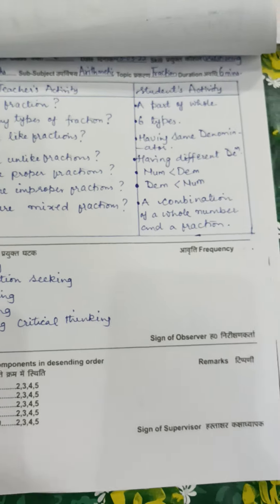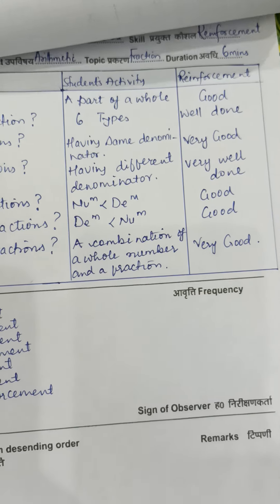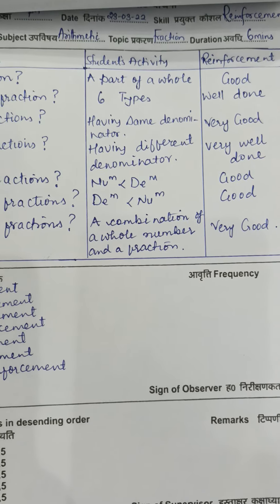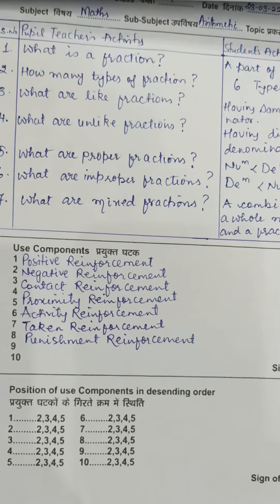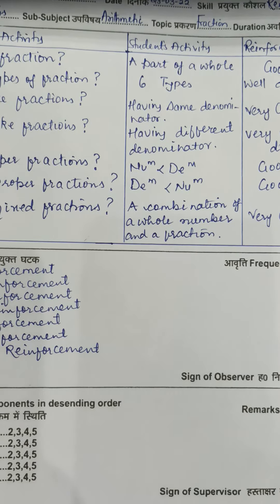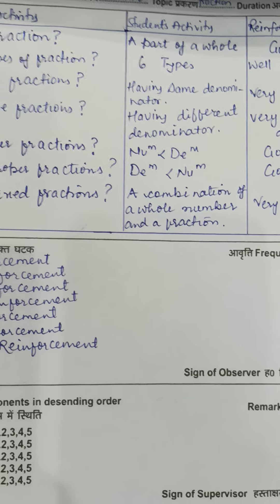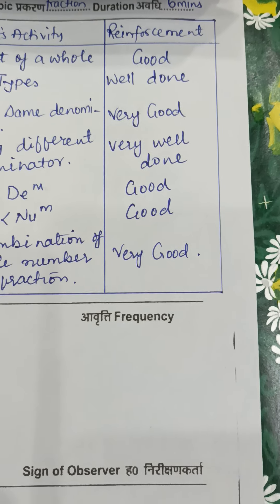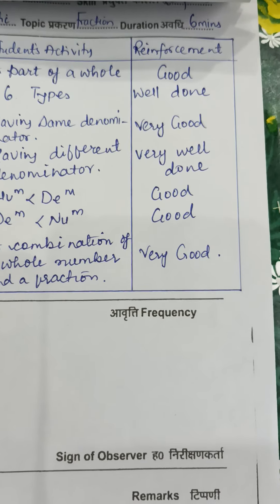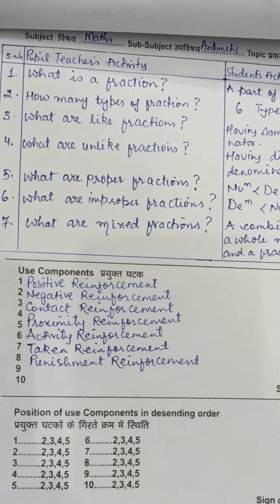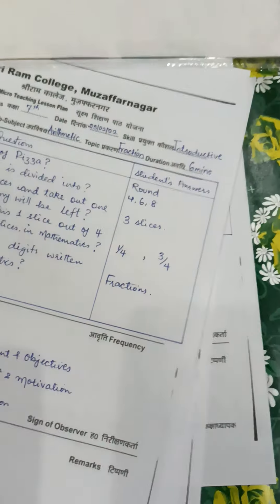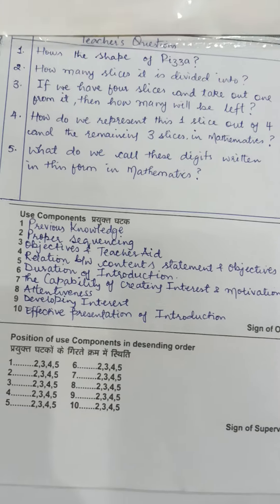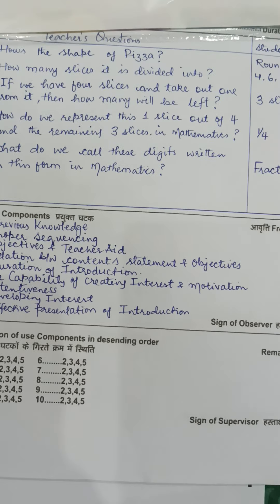Finally, the fifth skill is reinforcement. Reinforcement has three parts: the pupil teacher's activity, the student's activity, and the reinforcement — that is, the feedback. After asking a question, depending on the type of answer — whether it is complete, partial, or uncertain — the teacher displays reinforcement phrases such as: good, well done, very good, very well, good, and so on. So basically, we have five skills in micro teaching: introductory, explaining, blackboard, questioning, and reinforcement skills. This was for mathematics. Thank you.